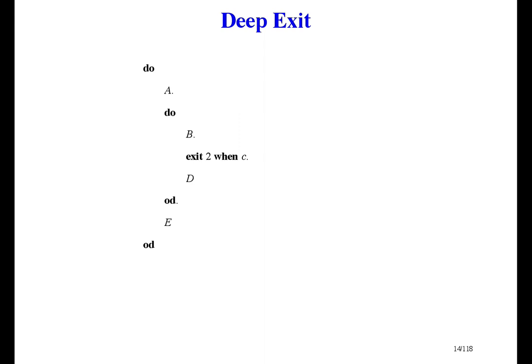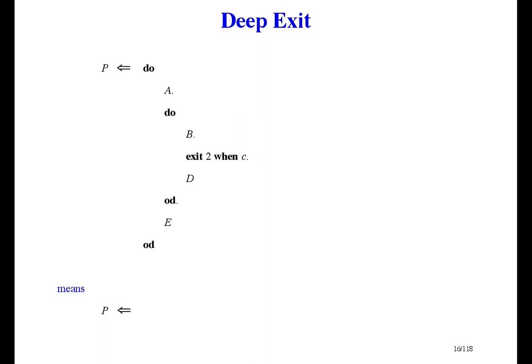Sometimes you might want to exit from the middle of several nested loops at once. Here we have a loop within a loop, and inside the inner loop we have an exit. Exit 2 when C means exit 2 levels of loop if condition C is true. We don't give a meaning to these loops, but we do give a meaning to a refinement where P is refined as this nested loop. For refinement, every loop must have a specification, so we have to invent one — and that is actually the hardest part of proving the correctness of a completed program. It's much easier to prove correctness while you are writing the program.